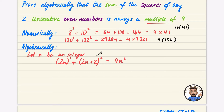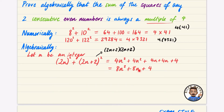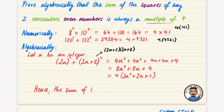Expanding (2n plus 2) squared gives 4n squared plus 4n plus 4n plus 4, which is 8n squared plus 8n plus 4. Taking out a factor of 4 gives 4(2n squared plus 2n plus 1). The expression inside the brackets is clearly an integer, so this is an integer multiplied by 4. Hence the sum of the squares of two consecutive even numbers is always a multiple of 4.